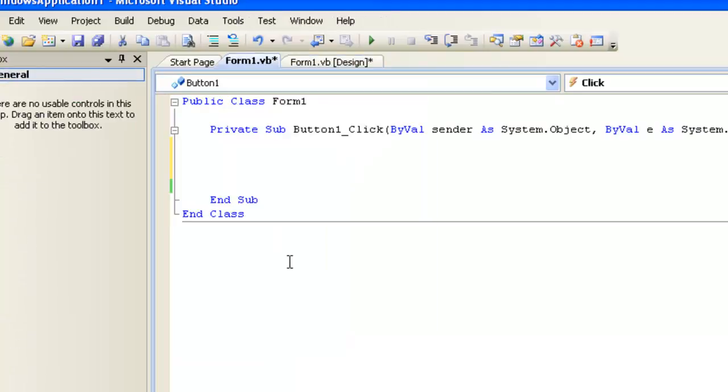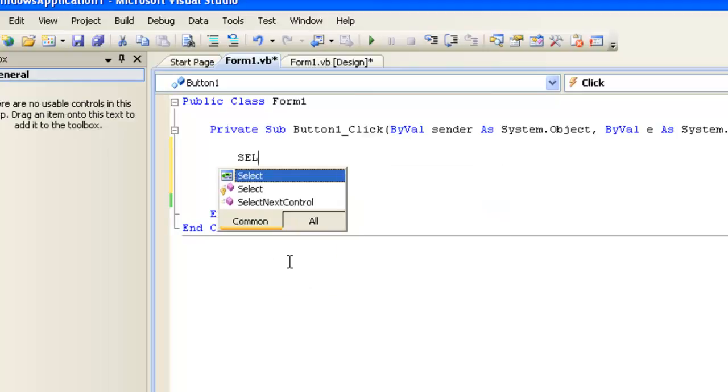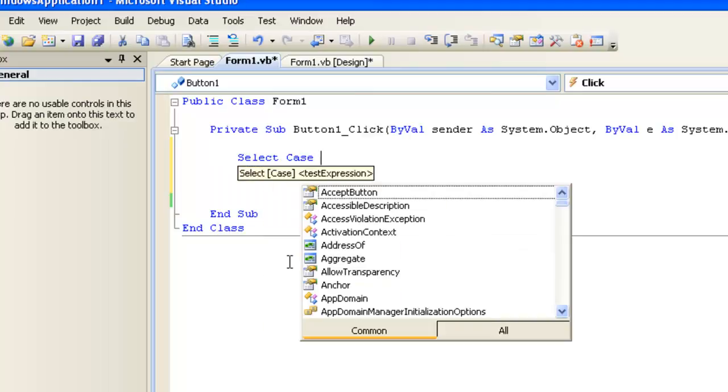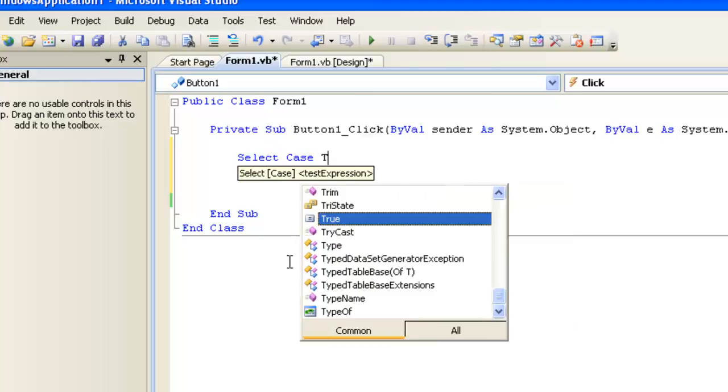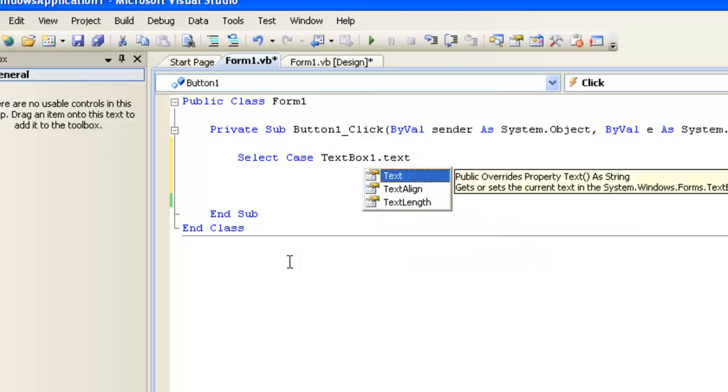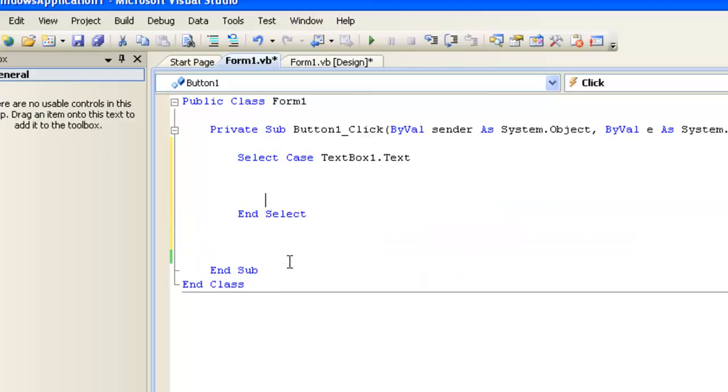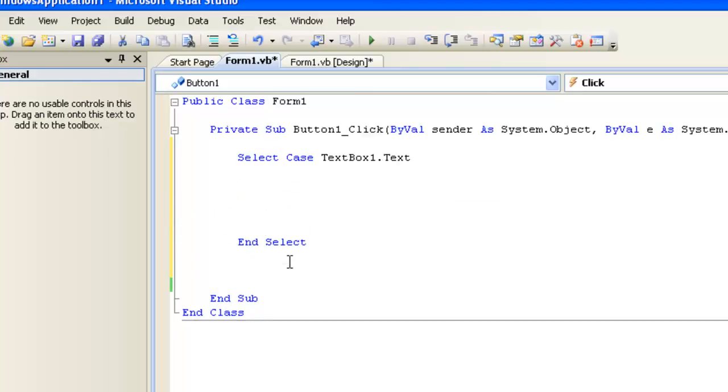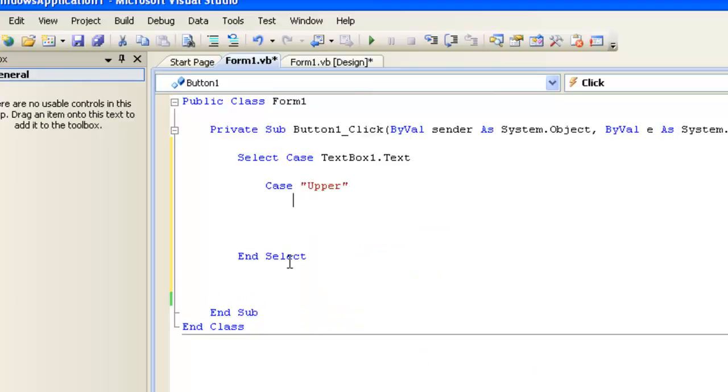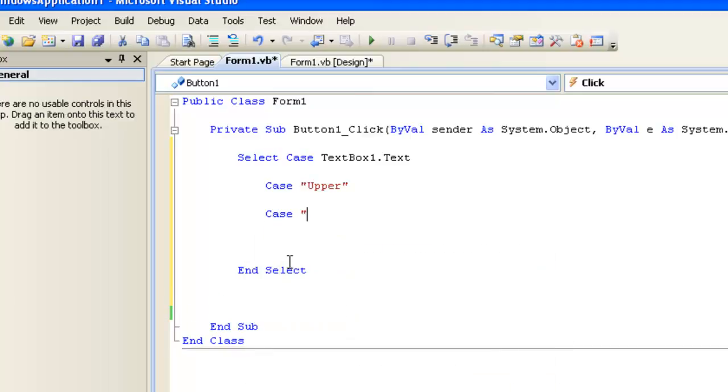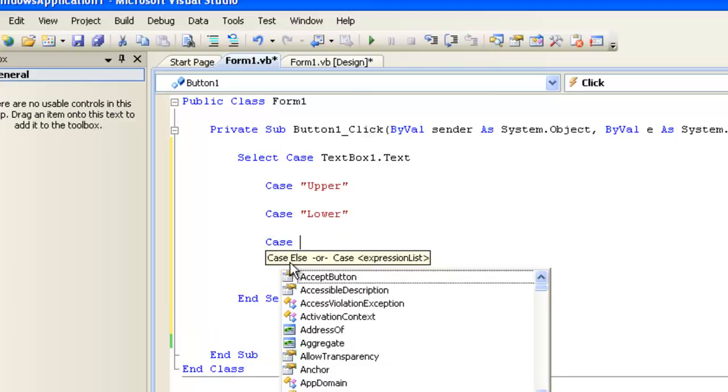So in this case, since we have three options instead of two, it's nice to use a case statement, which can have more than two different code paths. So to use a case statement, we start by saying select case, and then we type in the thing we want to evaluate. The user is putting their information in text box one. So that's what we'll put in there. And of course, we're using the text property of the text box, not the whole text box itself. Now, there are a bunch of different cases for what the user might put in there, they can put in case upper, they can put in case lower, and they can put in case middle.